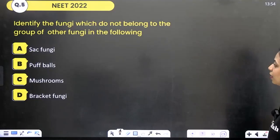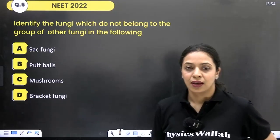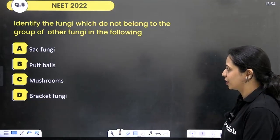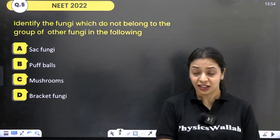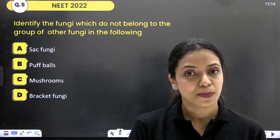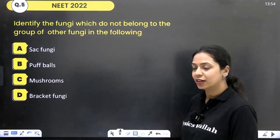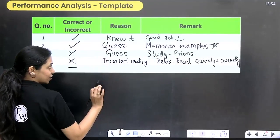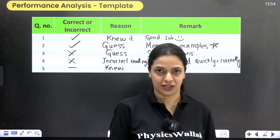Fifth question: Identify the fungi which does not belong to the group of the other fungi. Options are sac fungi, puff balls, mushrooms, and bracket fungi. Somewhere you know sac fungi is the answer — the others belong to Basidiomycetes. Your instinct says option A, but you fear negative marking, so despite knowing the answer you leave it unattempted. In the table: left unattempted, but you knew it. Remark: build more self-confidence.